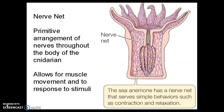Cnidarians are one of the first animals to have a nervous system — sponges don't have nerves. Cnidarians have what's called a nerve net: a primitive arrangement of nerves throughout the body that allows muscles to move and allows the cnidarian to respond to stimuli.